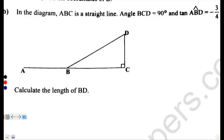The question reads, in the diagram, ABC is a straight line, angle BCD is equal to 90, and tan ABD is equal to negative 3 over 4. So, calculate the length of BD. So they want us to find the length of BD, right here. This is the length they want us to find.